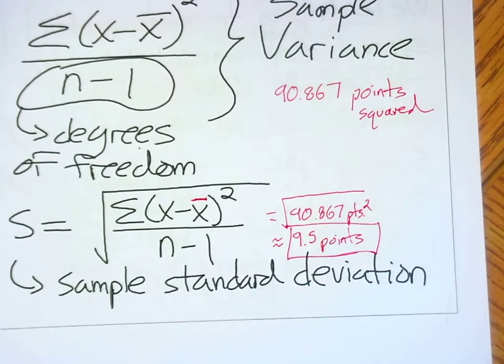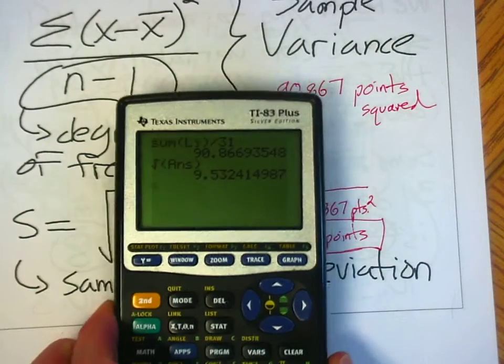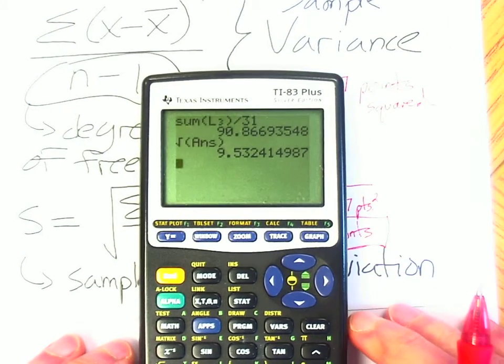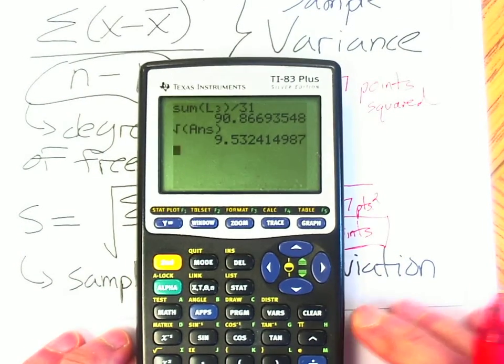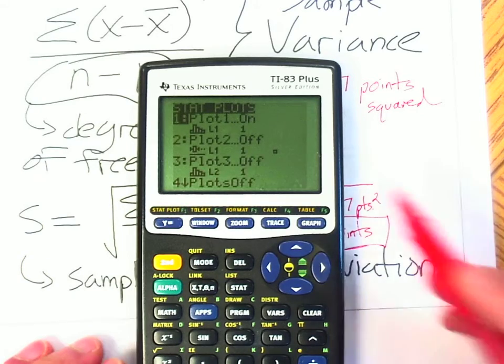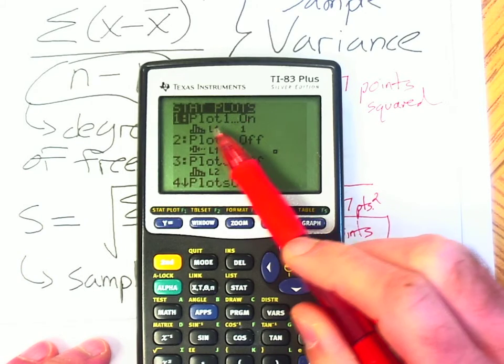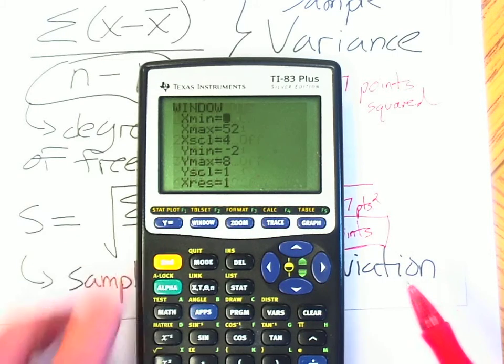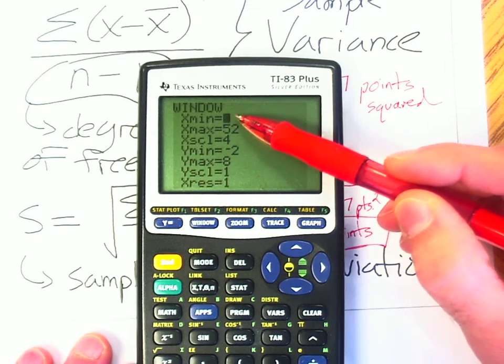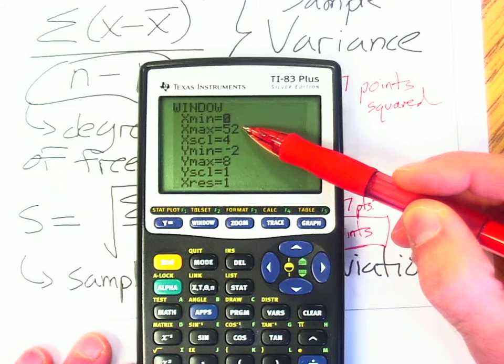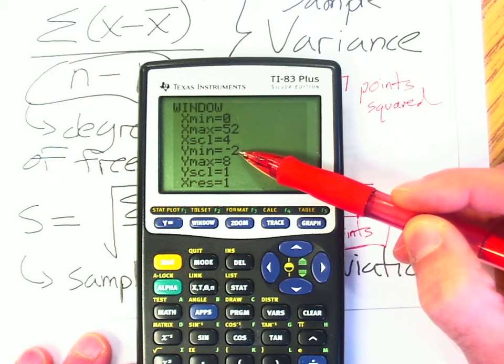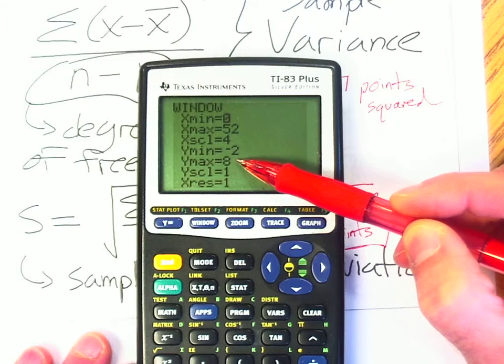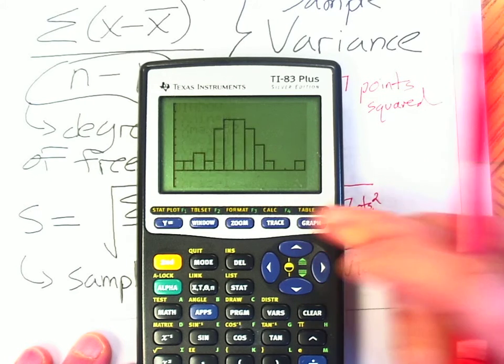So something important that we need to describe is what is that exactly? So let's go look at the histogram. My original NFL data are in list one. My plot one is on. I'm using the histogram option out of list one. Here is the window that we were using in class, using a minimum of zero, a maximum of 52, a scale of four. The Y minimum is negative two. The maximum is eight. The scale is one. So here is my histogram.